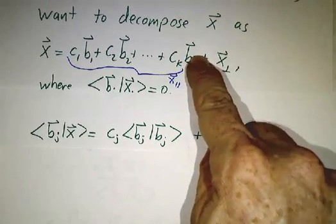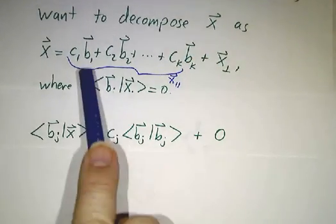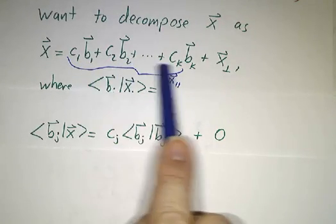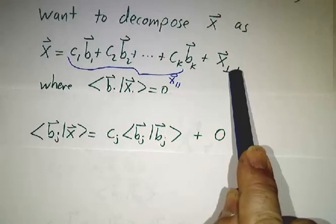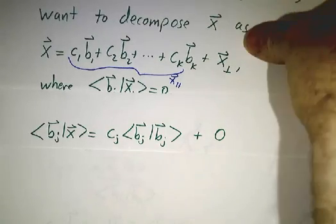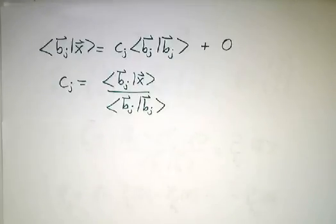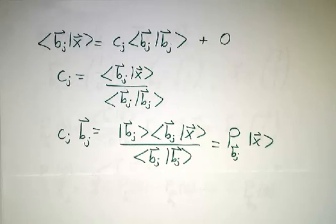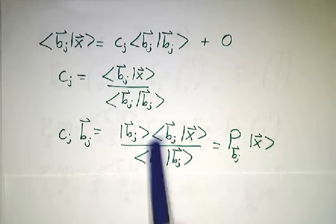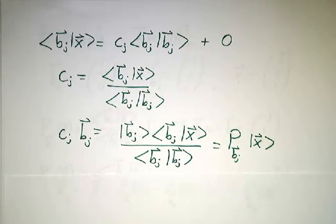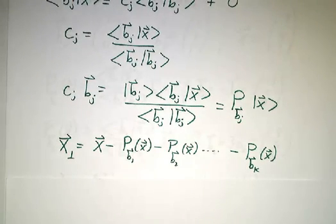And we want to figure out what are all the c's, and if we can figure out all these constants, then we can figure out what this part is, subtract it off, we've got this part. So once again, we take inner products. If you take the inner product of bj with this whole equation, the inner product of bj with x, the inner product of bj with b1 is 0 because they were orthogonal. All the terms here are 0 except for bj dotted into itself. And bj dotted into x-perp is 0 because x-perp was perpendicular from everything else. And so that gives us our coefficients. It's the same formula we've seen before.